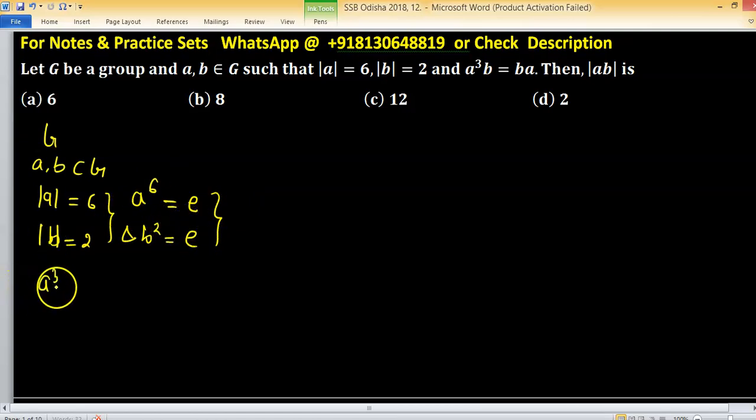Also, we have a condition a cubed b equals to b a and we have to find order of ab. Order of ab is from possibilities given to you as in options.